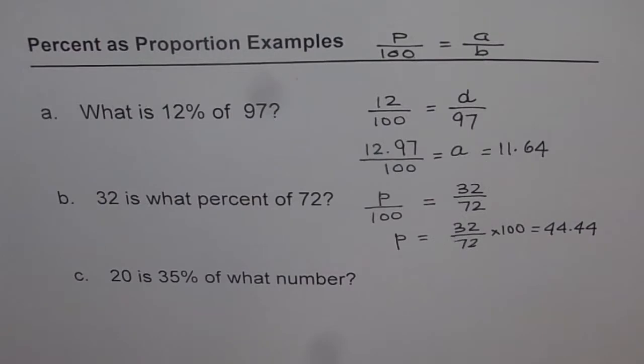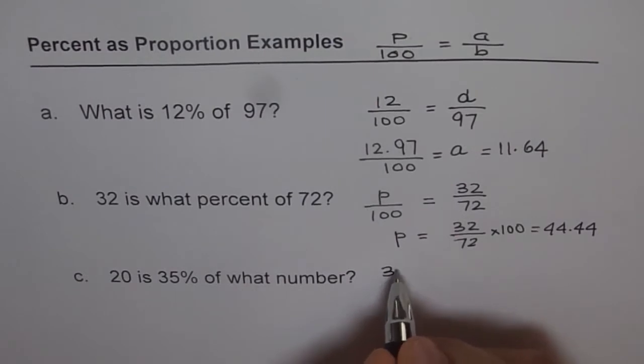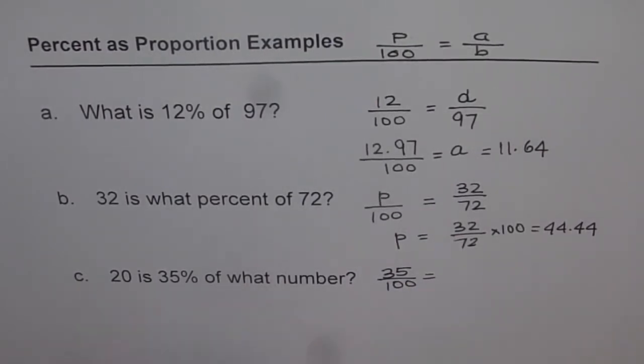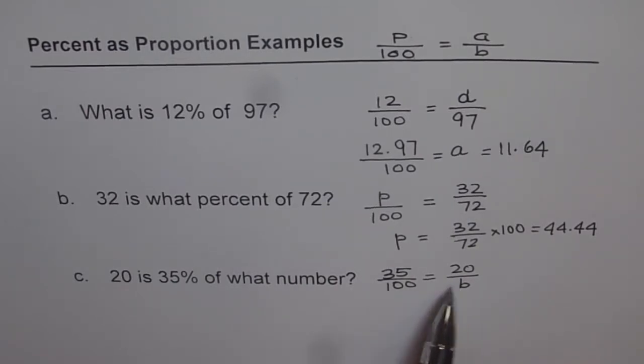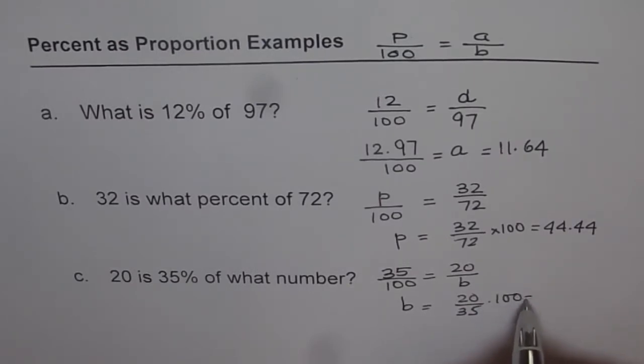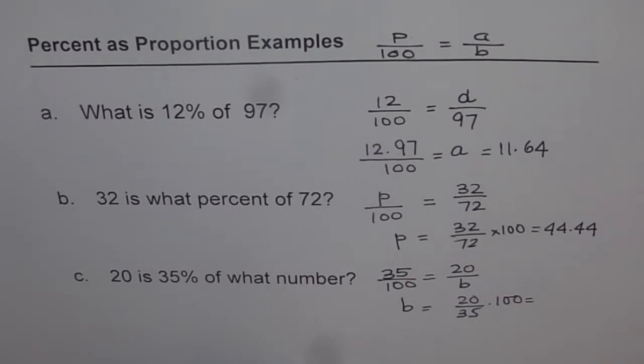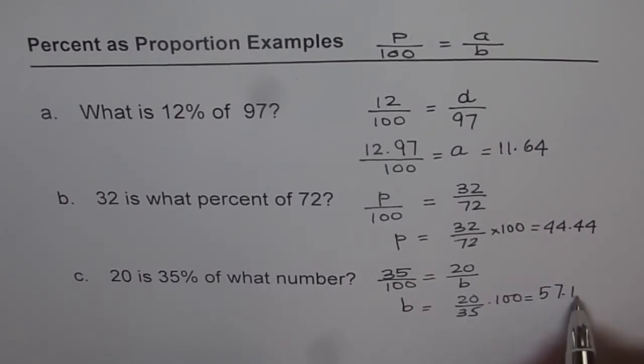Now the last one is 20 is 35% of what number? So 20 is a part amount. We don't know the whole amount. So that is the whole number. So 35% is given to us. So we write 35% equals to 20 is a part amount of what number. So we write 20 over b. Now in this case, we will again cross multiply and find b. So we get b equals to, b comes here and we get 20, 35 goes down times 100. And now again use your calculator, do 20 times 100 divided by 35 equals to 57.142. So we will write this as 57.14.